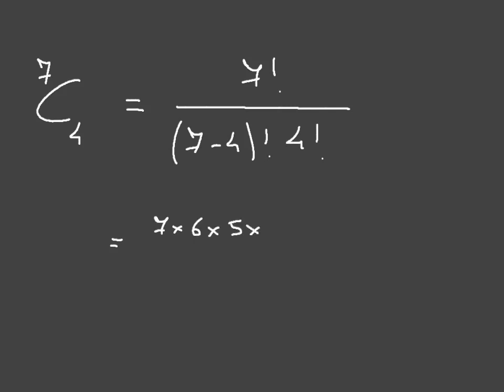Let's say we had to calculate 7C4. Using the same notation as we just did, this would lead us to 7 factorial over 7 minus 4 factorial times 4 factorial. I'll go ahead and use the same method. The numerator is equal to 7 times 6 times 5 times 4 times 3 times 2 times 1.